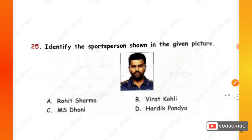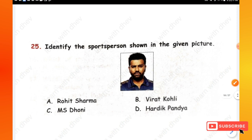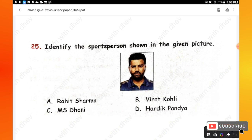Question 25: Identify the sports person shown in the given picture. Options are: Rohit Sharma, Virat Kohli, MS Dhoni, Hardik Pandya. The right answer is option A — Rohit Sharma.